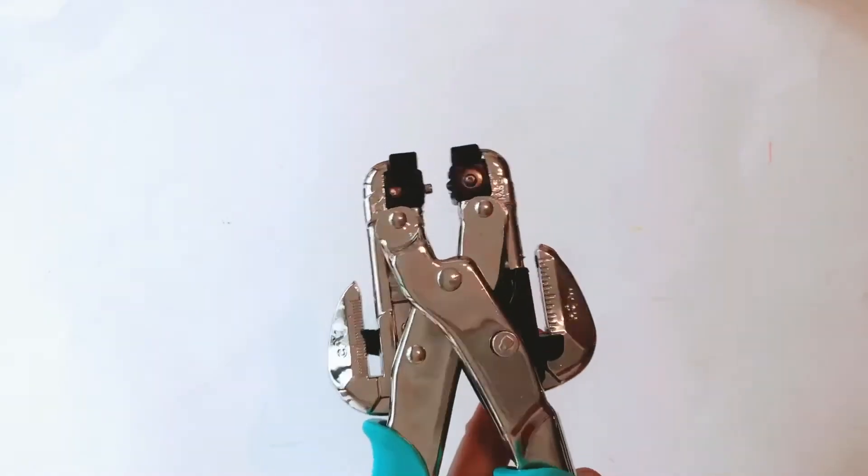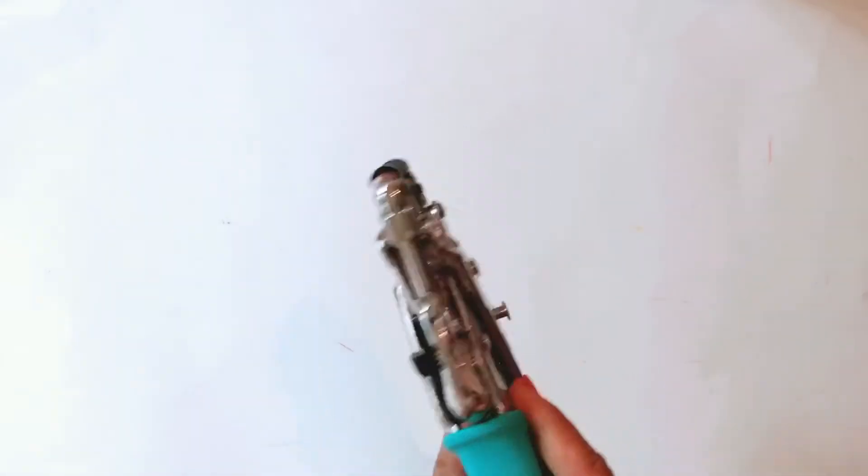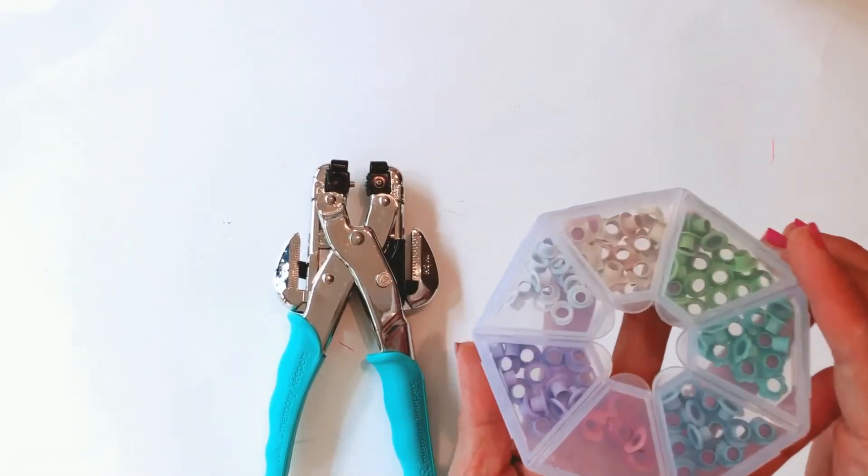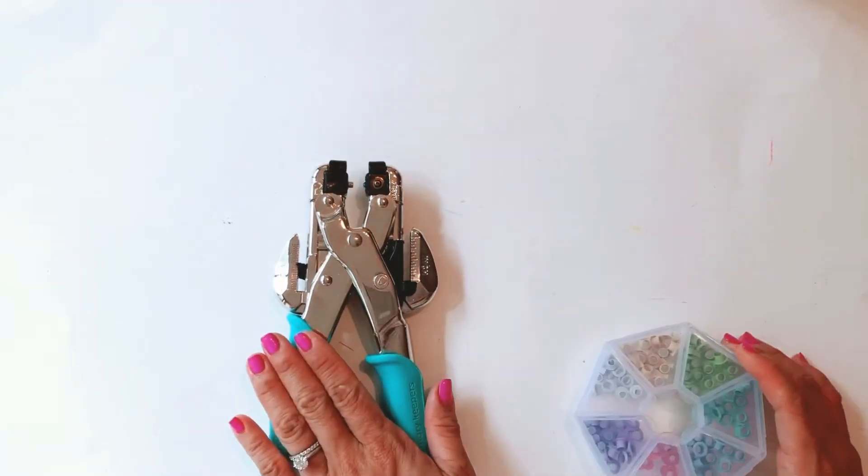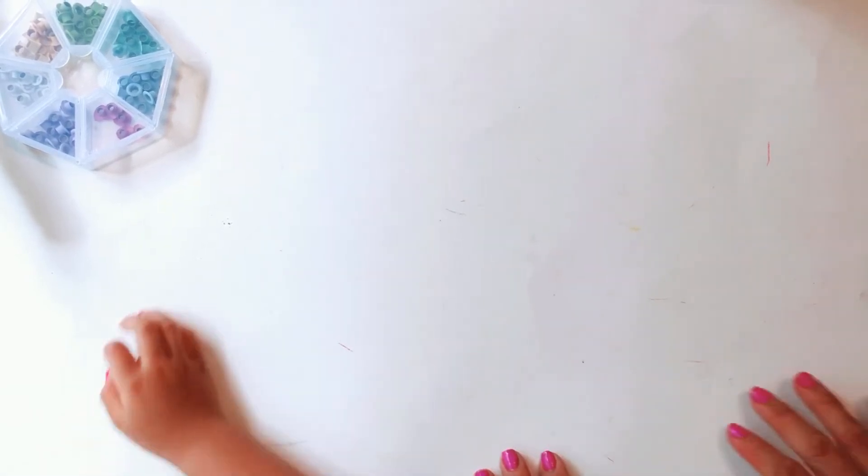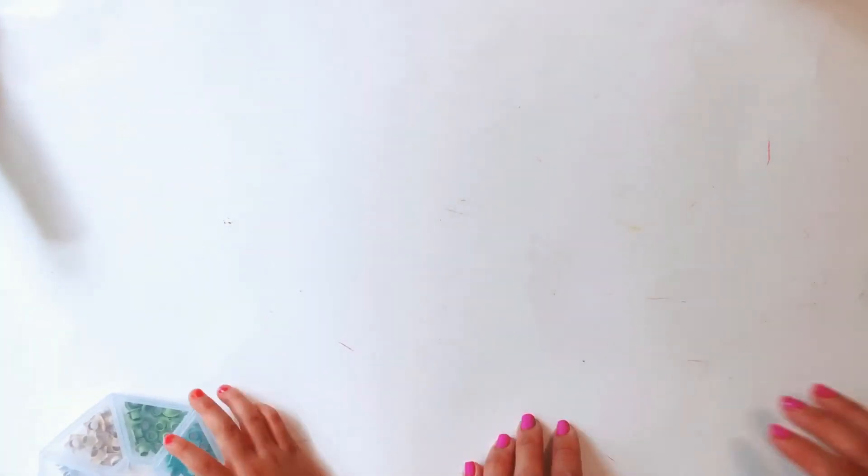My We Are Memory Keepers Cropadile has made it to my January favorites because I've just been using this so much lately. I use that in combination with these beautiful pastel-colored eyelets. I've been using them in my banner projects lately, my tag flips, my binder mail, just using it a lot. Yeah, just been reaching for it a lot. That's why that's made it to my January favorites.